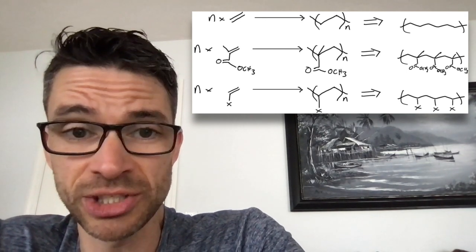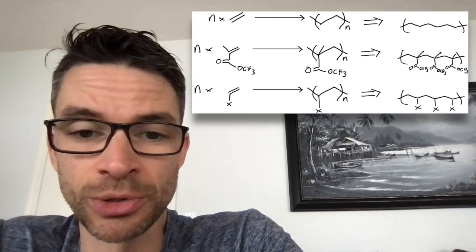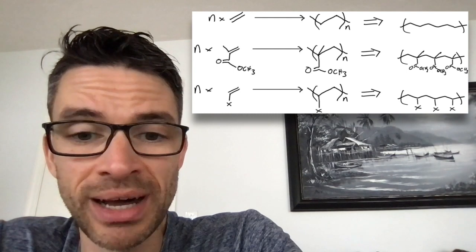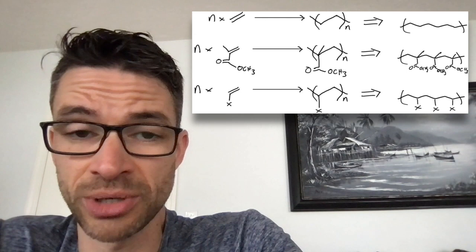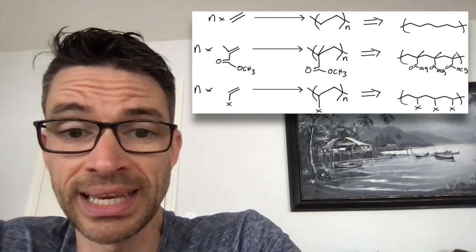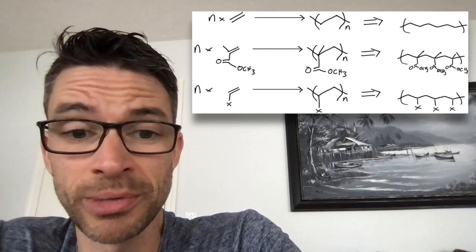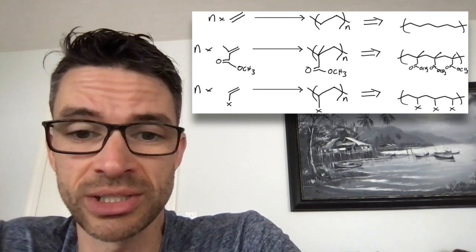And finally, the generic structure, which shows any vinyl monomer where you have an X group hanging off of a double bond. And when you want to know the product of that reaction, you just draw a zigzag structure and then put an X group on every other carbon atom. And these polymers are all made by a mechanism called chain growth, which we'll get to in a second.